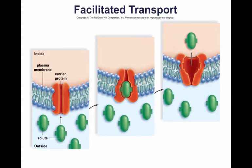Then the transporter reverts to its original shape. Now some of these passive transporters don't change shape — they're permanently open. They are channels through a membrane. Others are gated, which means they open and close in response to a stimulus, such as a shift in electrical charge or binding of a signaling molecule.